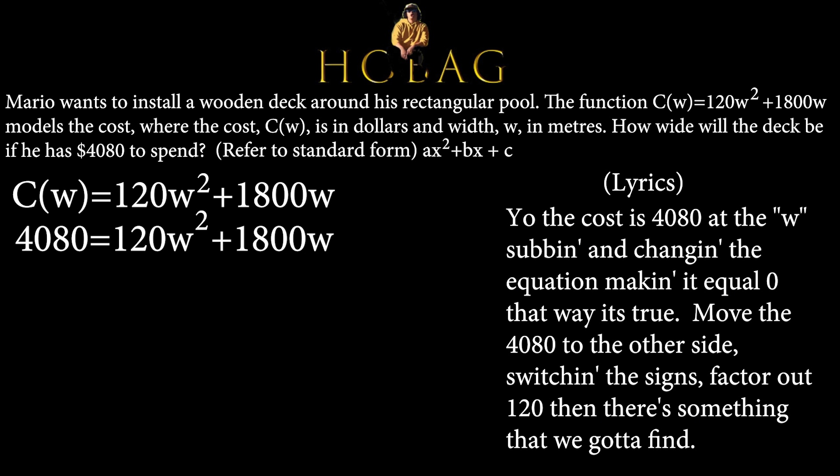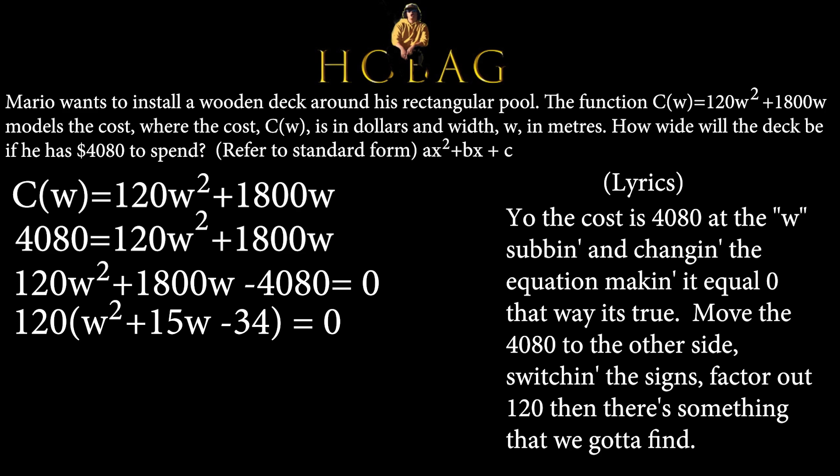Yo, the cost is 4080 at the w, subbing and changing the equation, making it equal 0, that way it's true. Move the 4080 to the other side, switching the signs. Factor out 120, then there's something that we gotta find.